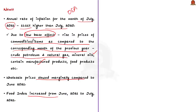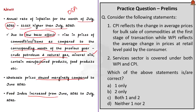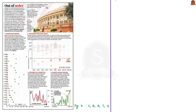With this basic information, we came to the end of the WPI discussion. In this article, we came to know about core concepts of economics like what is the Wholesale Price Index, its base year, and what is the base effect. Let us move on to the next discussion.